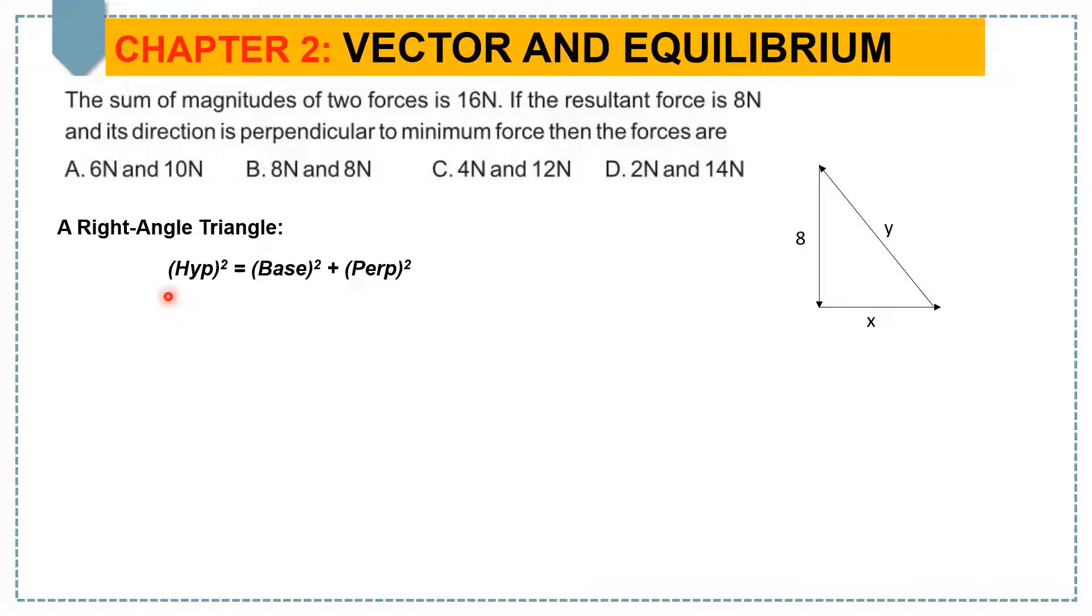Now, we know that hypotenuse square equals base square plus perpendicular square. Now, putting the values Y square equals X square plus 8 square. By simplifying, we get 16 equals X plus Y where Y equals 16 minus X. Now, if we replace this Y by 16 minus X and we simplify, then we get X equal to 6.